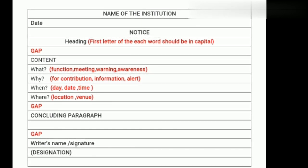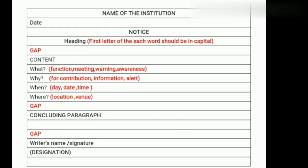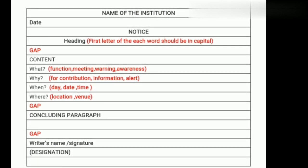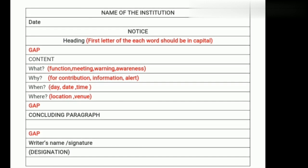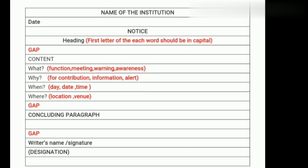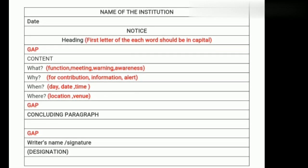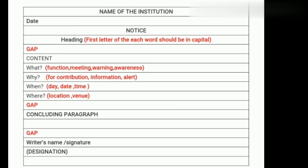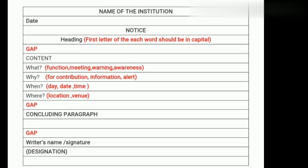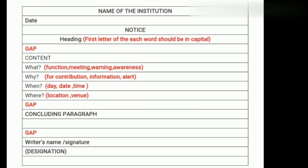In the content you have to mention what, why, when, and where. For what purpose the notice is being written; why — do you want a contribution from them or do you want to inform or alert them; when — day, date, time; and where — location and venue. After that we leave a line and then write the concluding paragraph.